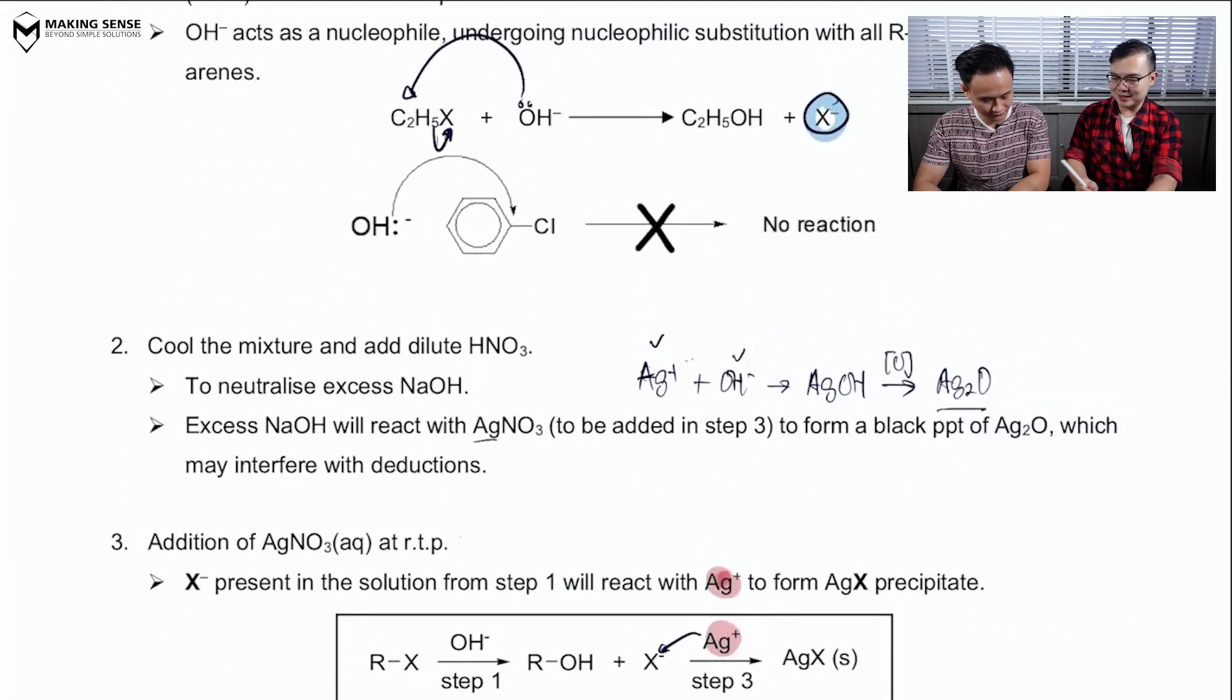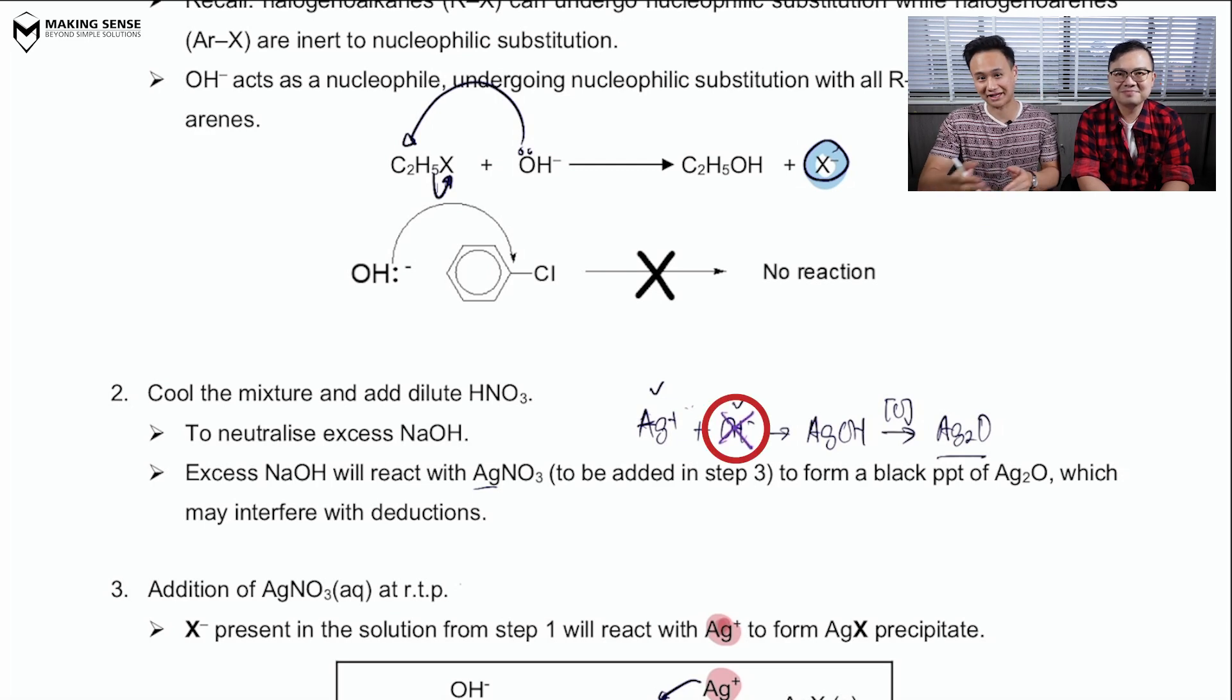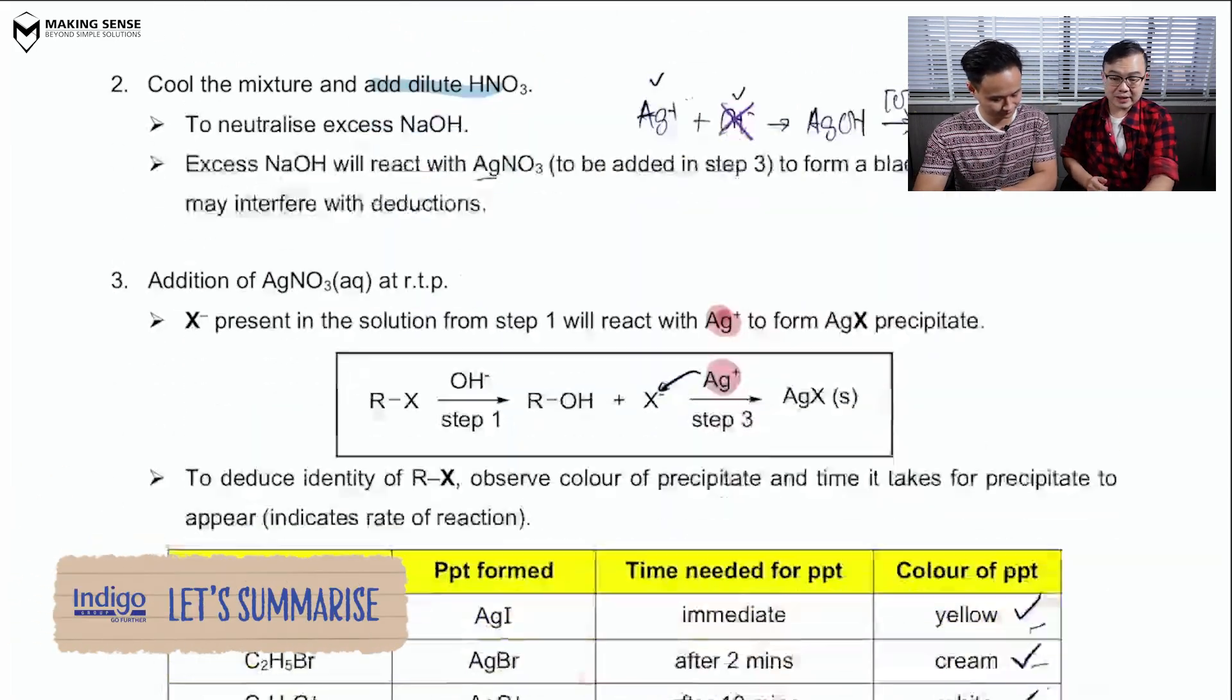So, can you tell me a way to combat that, Mr. Tim? Well, if I don't want an Ag+ to react with my OH-, then I need to find a way to get rid of this. Now, we know from topic 3 and topic 4 that H+ reacts with OH-, so to remove that excess hydroxide ions, I'm going to add in an acid. And that's exactly why we add in dilute nitric acid in step 2.